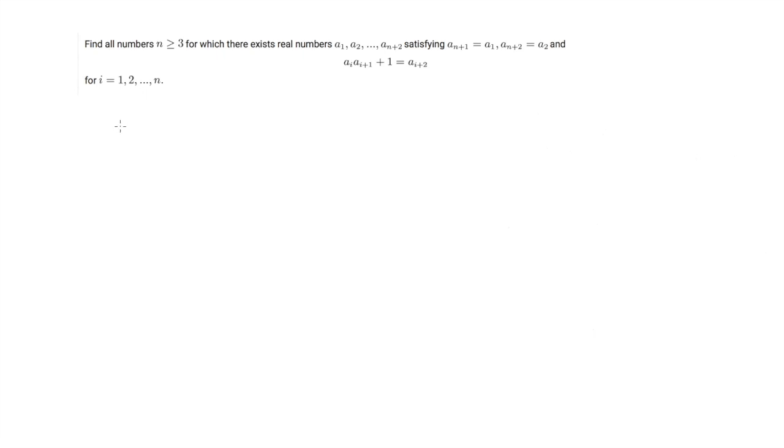So the first thing we want to do is try out some small numbers of n, for example n equals 3 or 4, and see what happens. Indeed, it is not hard to find out that when n equals 3, there exists a solution with a_1 equals minus 1, a_2 equals minus 1, and a_3 equals 2.